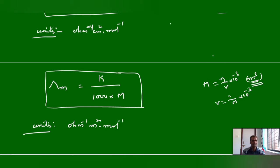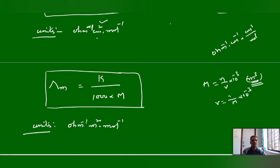To summarize: specific conductance in ohm inverse centimeter inverse multiplied by 1000 by molarity gives units of ohm inverse centimeter squared mol inverse, since centimeter inverse times centimeter cube (from liter conversion) gives centimeter squared, and moles go to the denominator as mol inverse.